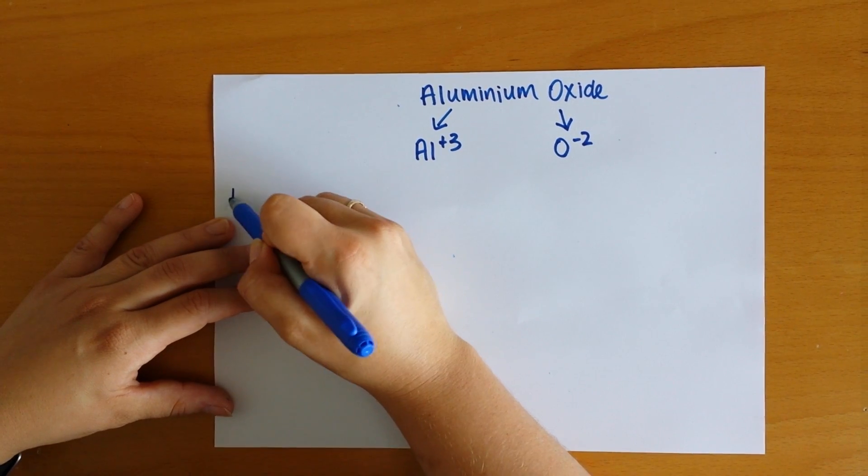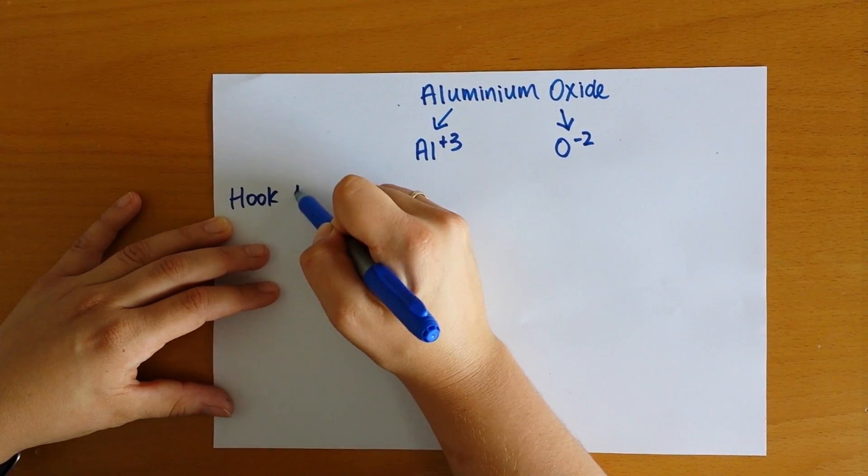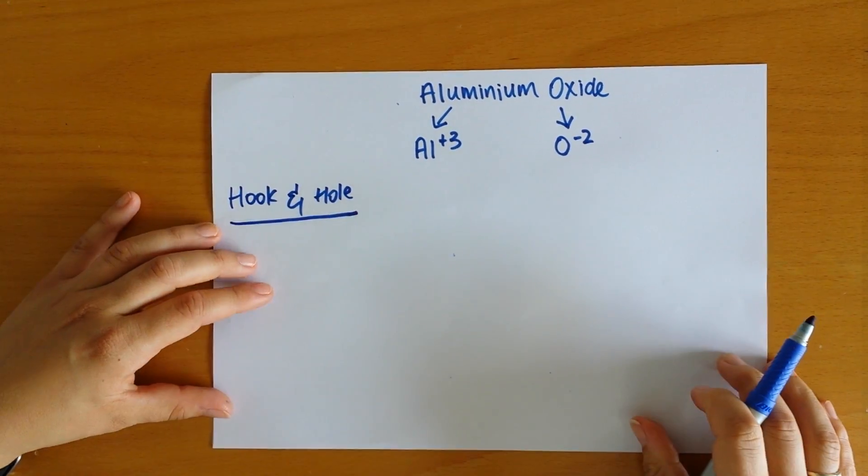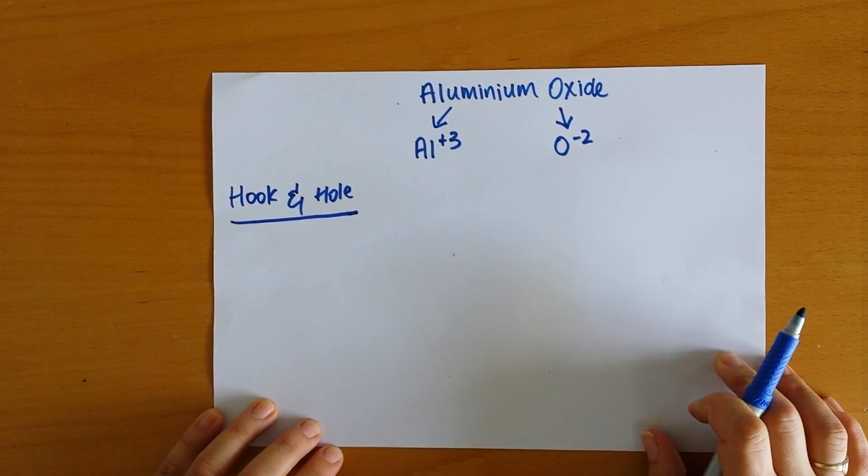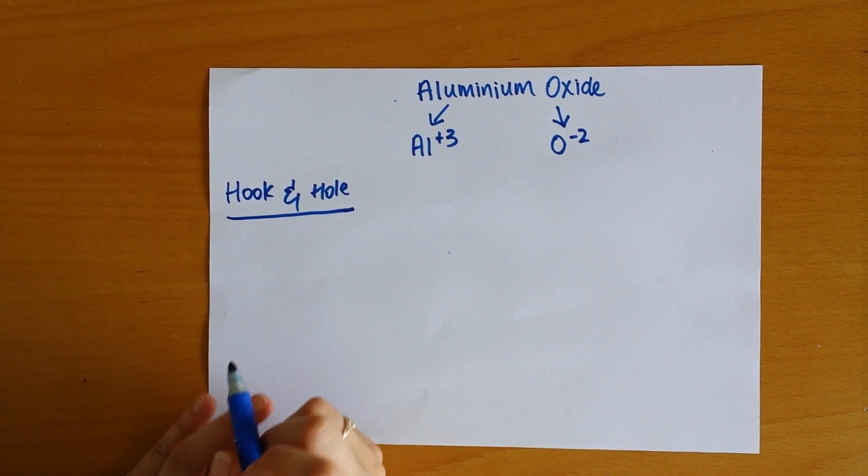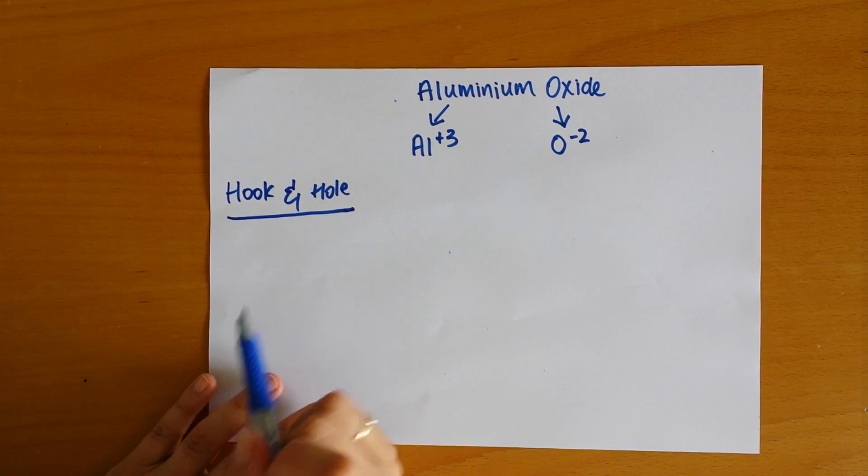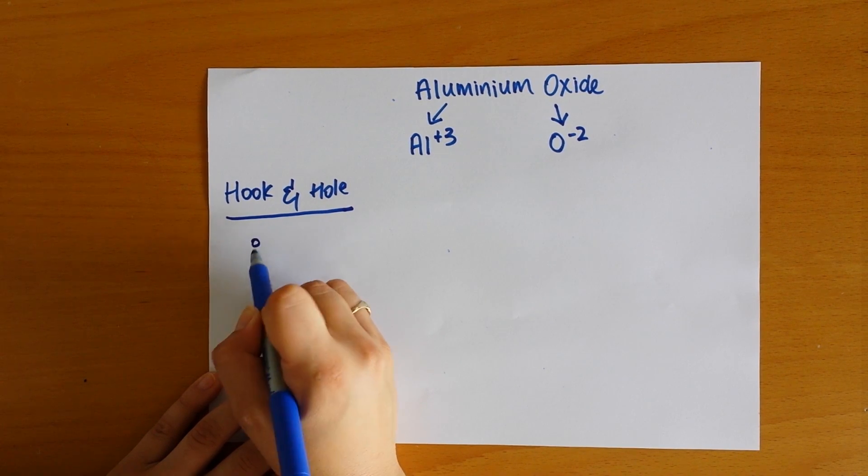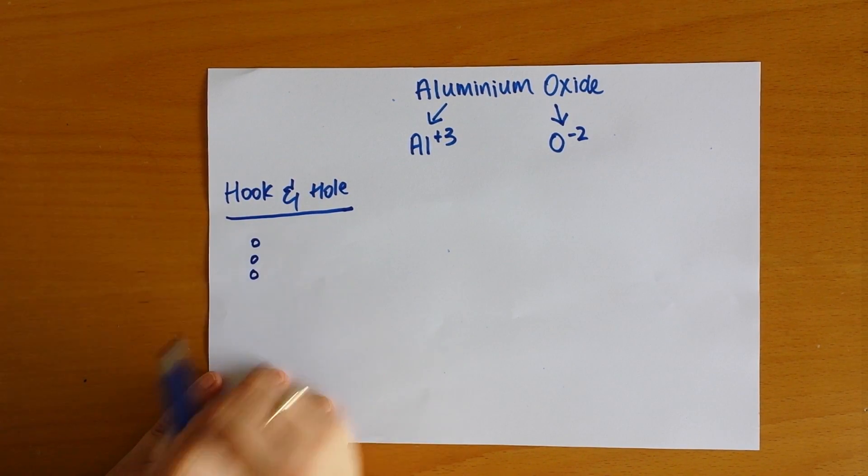The first example I'm going to go through is this hook and hole method. This is probably more if you're a bit of a visual learner. What this means is that for your cation, which is aluminum in this case, you're going to draw out a hole, one hole for every charge that you have. So in this case we have three.